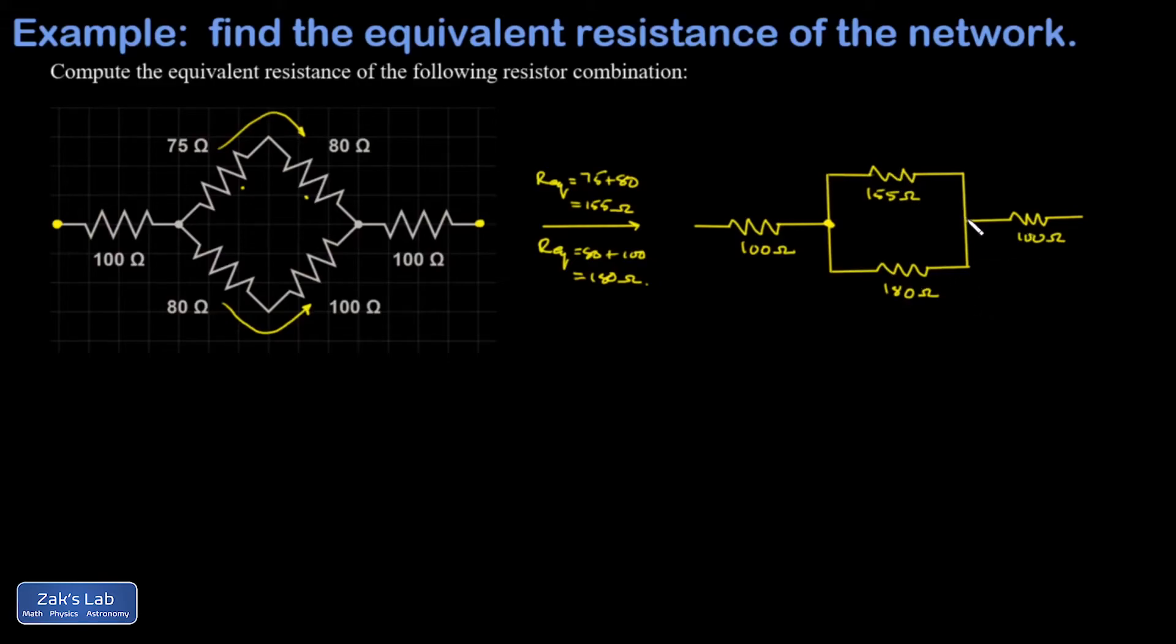So the 155 and the 180 are clearly in parallel. That's my next step. Remember the formula for that is 1/R1 + 1/R2 = 1/Req. So I'm just going to plug in my numbers here: 1/155 + 1/180.